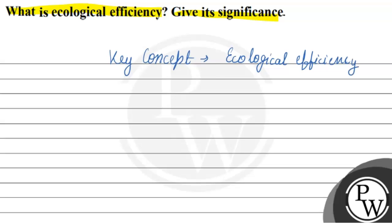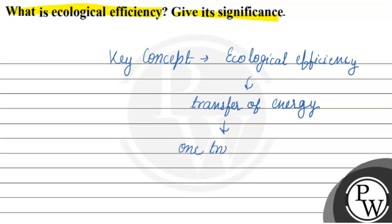Ecological efficiency is the efficiency of transfer of energy from one trophic level to another. This transfer of energy from one trophic level to another is called ecological efficiency.